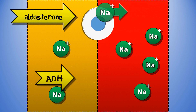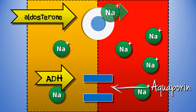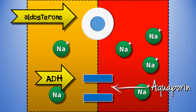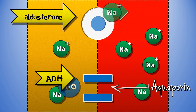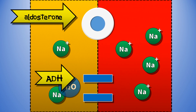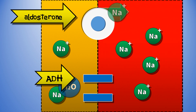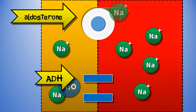ADH increases the collecting duct's permeability to water by translocating aquaporins. Increase ADH and more water is absorbed back into the bloodstream, concentrating the urine. That's another good way to increase blood volume when dehydrated. All making sense so far? Cool.